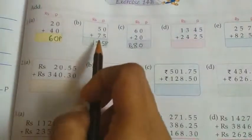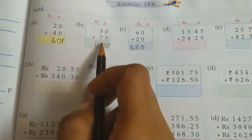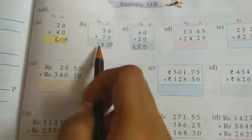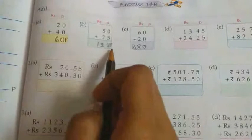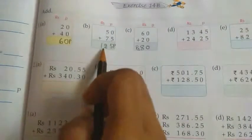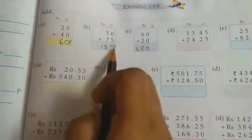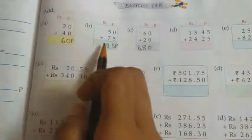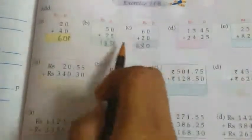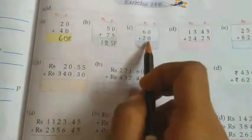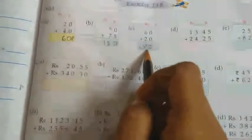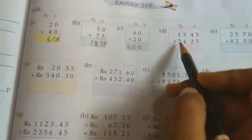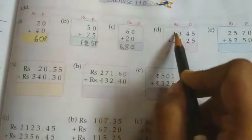Here only paise given, so 60 paise plus 50 paise plus 75 paise, that means 125 paise, which equals 1 rupee 25 paise. Here 60 rupees plus 20 rupees means rupees 80.